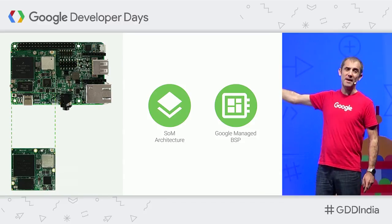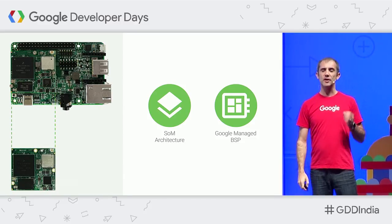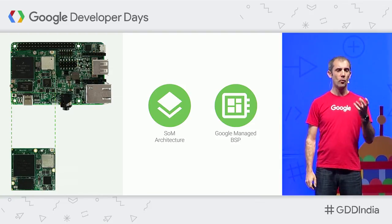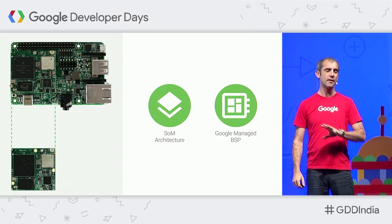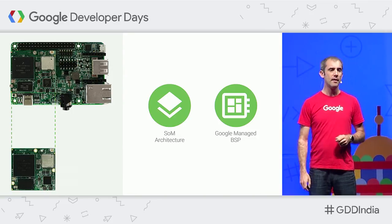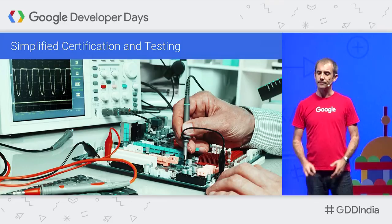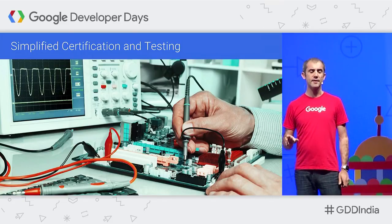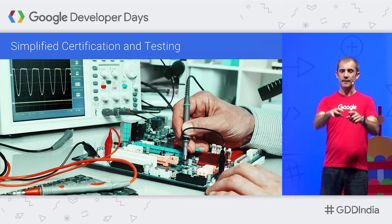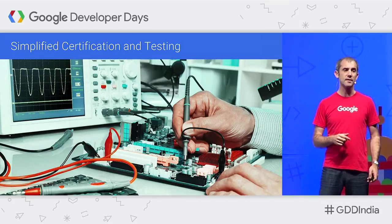We have what's called a BSP, or board support package — software from Google that makes the SOM and your board work by running Android Things on it. We provide the kernel, the libraries, and necessary drivers to make it work. As long as you stick to the design of the SOM, everything will work. Also, the SOM has already been certified by regulatory agencies like Underwriters Laboratory and for FCC certification, so the certification process for the rest of your hardware is a lot cheaper, quicker, and easier. This means you can get your product to market faster.